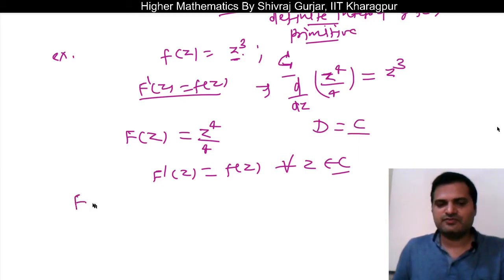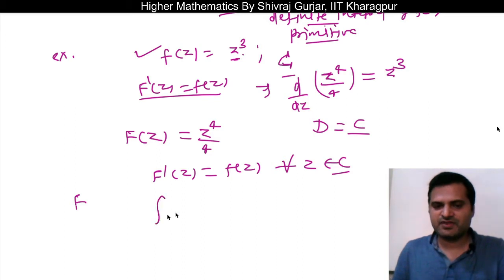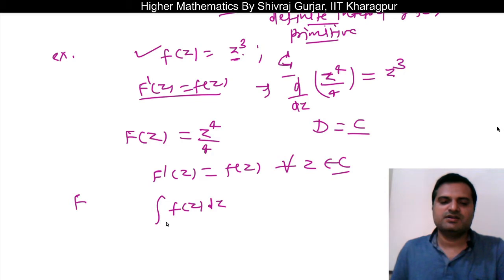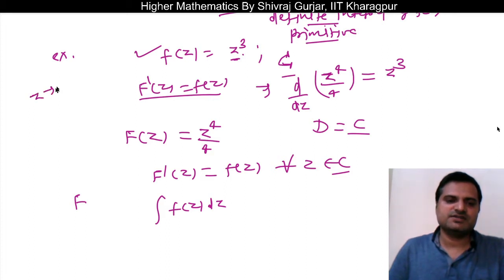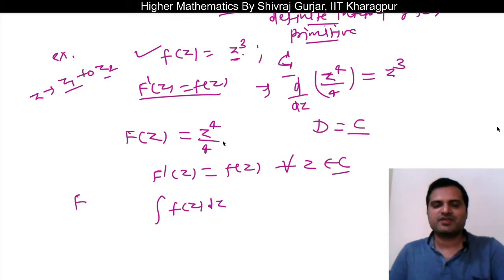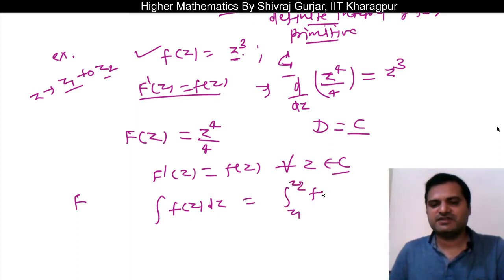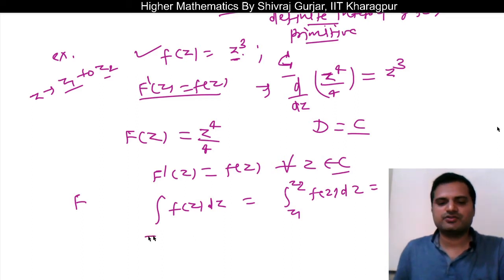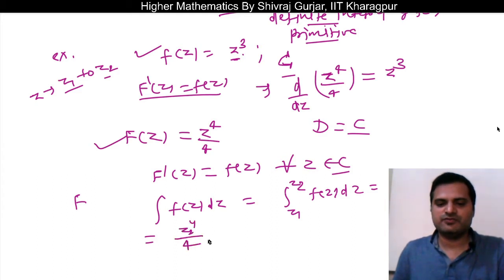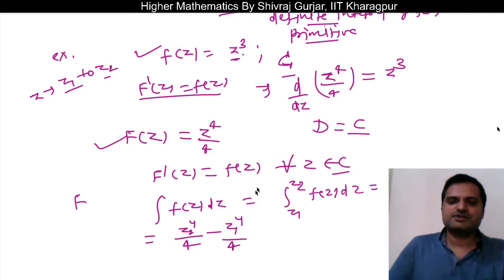So by the Fundamental Theorem of Calculus of functions of a complex variable, we can say that the anti-derivative of small f(z) exists. The integral of f(z) dz from z1 to z2 will be capital F(z2) minus capital F(z1), which equals z2⁴/4 minus z1⁴/4.